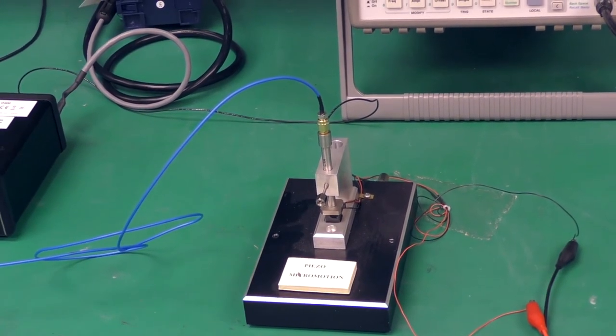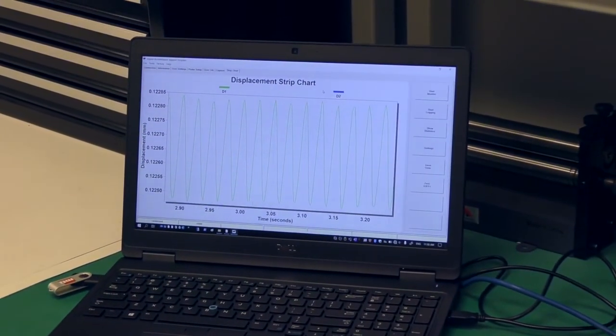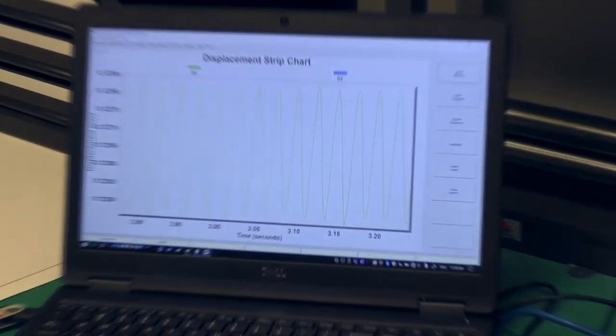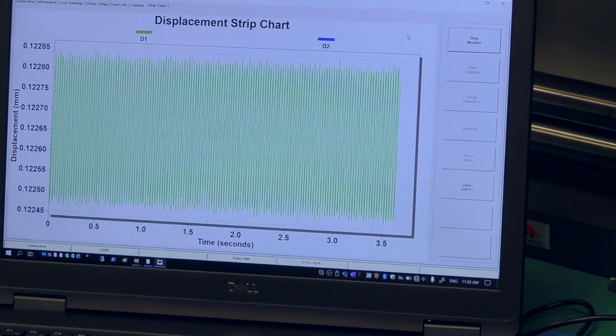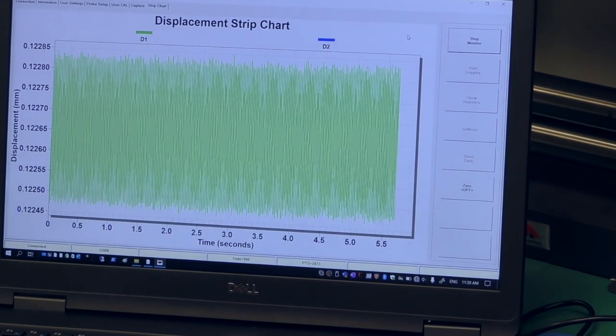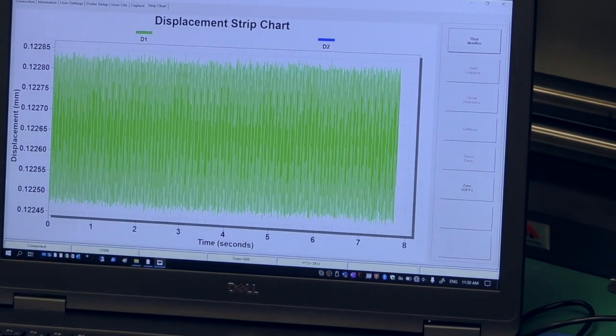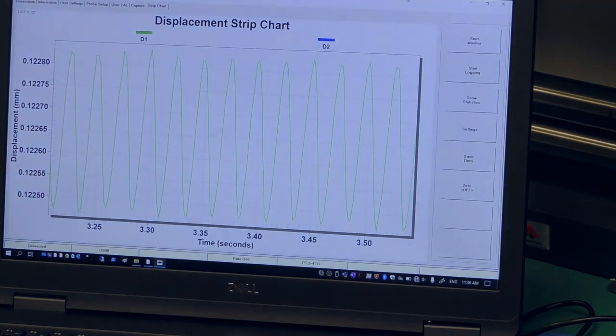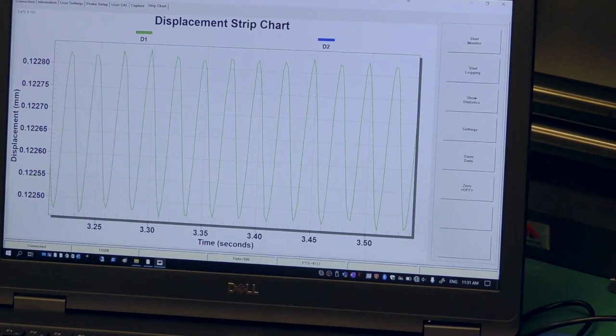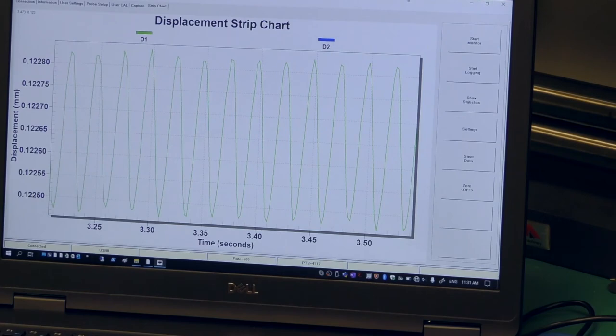Now we're going to go back to the software. In the strip chart, we're going to be able to see the frequency that we're putting into that crystal. If we stop it for a bit and zoom in, we can see the peak-to-peak amplitude of that crystal. And this can go to submicron range.